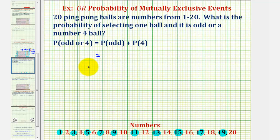So the probability that the ball is odd would be ten twentieths. Plus, there's only one ball out of the twenty that's four. That would be this one here. So the probability of the ball being four would be one twentieth.